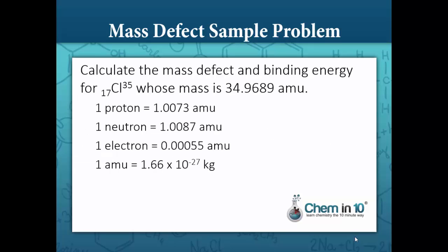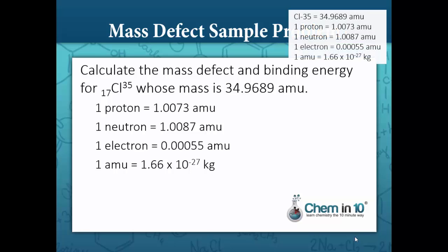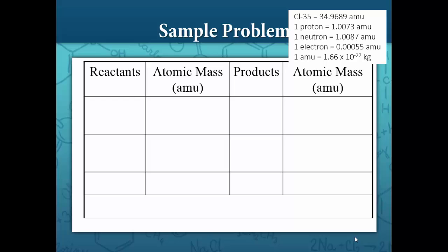Let's do a sample problem. Calculate the mass defect for chlorine-35, whose mass is 34.9689 AMUs. One proton is equal to 1.0073 AMU. One neutron is equal to 1.0087 AMU. One electron equals 0.00055 AMU. And one AMU is equal to 1.66 times 10 to the negative 27 kilograms. Chlorine-35 consists of 17 protons and 18 neutrons.